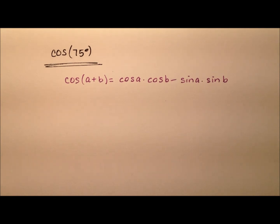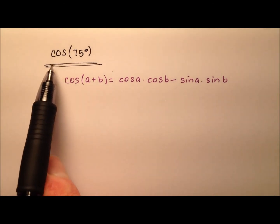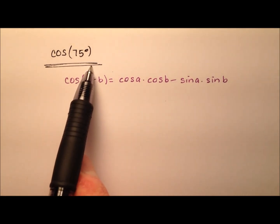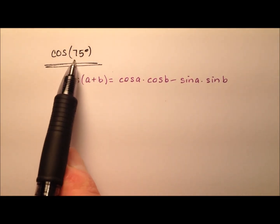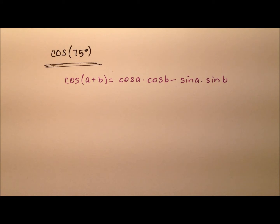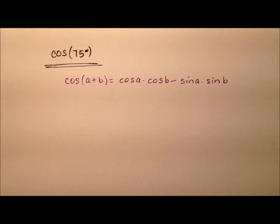In this video, I'm going to show you how we can find the exact value for the cosine of 75 degrees. I'm going to take you through two different processes, each of which seemingly gives you different answers. But then at the end of the video, I'll show you that those two answers are actually the same number, just different forms.